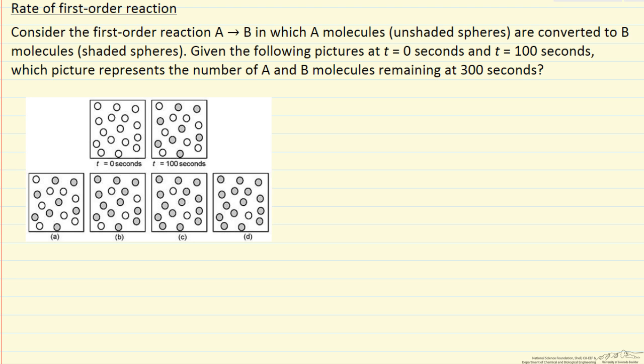So we start out, we can see we have 16 A molecules, and it says at 100 seconds we've had some reaction, and now we have 8A and 8B. The question is, what does the figure look like at 300 seconds?